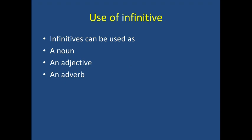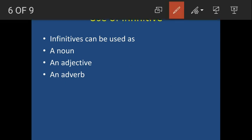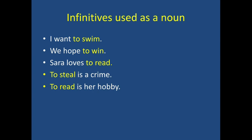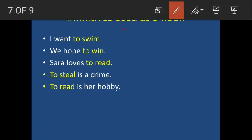Now, what are the uses of infinitives? Infinitives can be used as a noun, as an adjective, or as an adverb. Let us see examples of infinitives used as a noun. 'I want to swim' — the infinitive is 'to swim,' which is used as a noun. It comes in the place of the object. 'We hope to win' — 'to win' is the infinitive, again a noun. 'Sarah loves to read' — 'to read' is an infinitive acting as a noun.